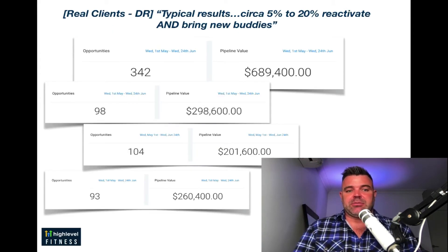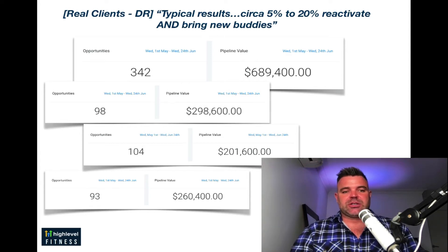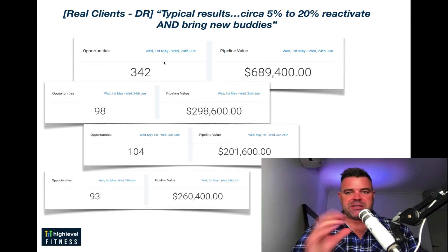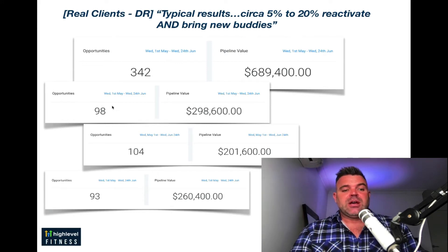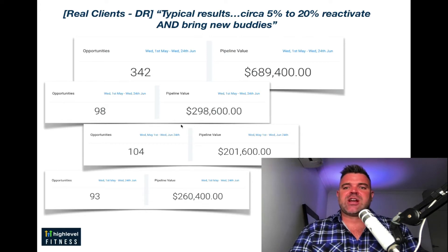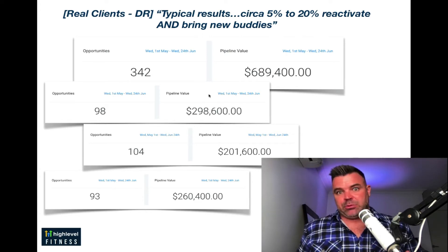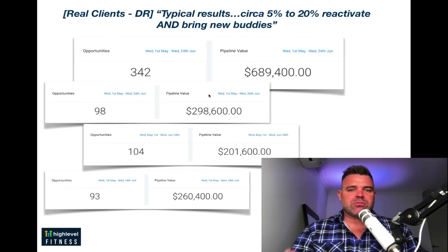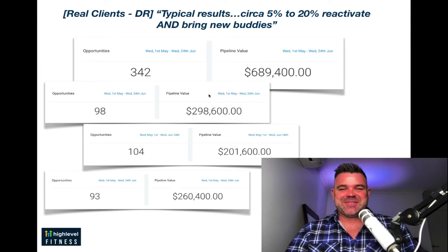Here are real results from my GrowFit Pro agency clients. This top one got 342 responses from a database of 5,000 people. Another was from a 2,000 database, another from 1,500, and another from 1,000. We're getting between 5% and 20% reactivation rates, and they're also bringing their buddies along as well. You can run these database reactivations every six months or even every three months if you want.